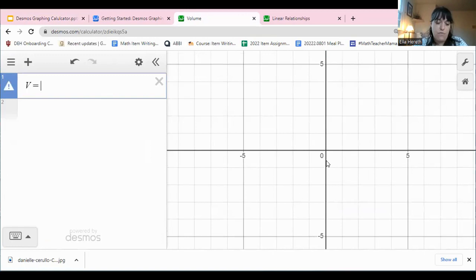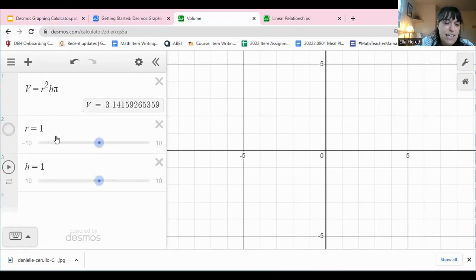So here is a blank Desmos graph. And I'm going to jump in just with typing the formula. You get good at some of these Desmos shortcuts after you've done it for a little while. And I'm going to add some sliders. I added one for radius and for height. And right now the slider is set at one. You can see that if my radius was one and my height was one, my volume would be pi, which makes sense.